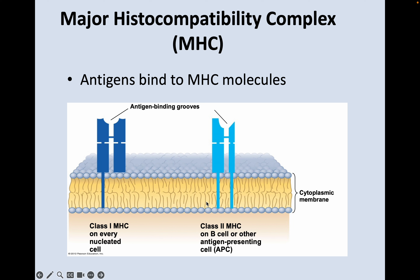We also have class 2 MHC on B cells or other antigen-presenting cells, like dendritic cells, with another antigen binding groove at the top. One way to remember these: class 1 MHC has one part of the protein that goes through the membrane; class 2 has two parts of the protein that go through the membrane — MHC 1 and 2.